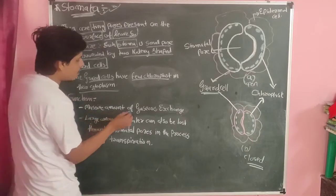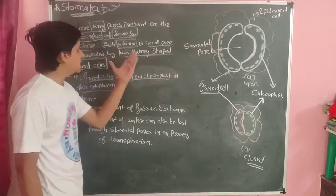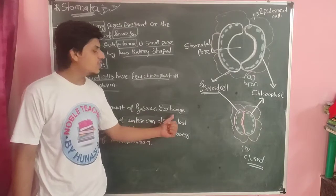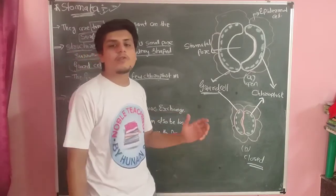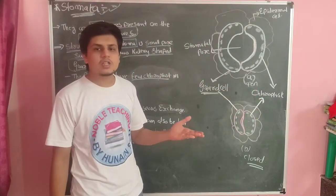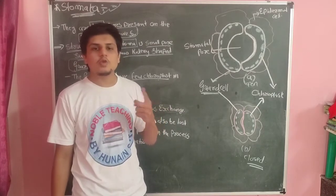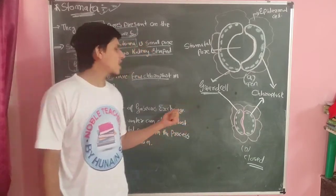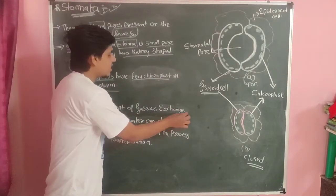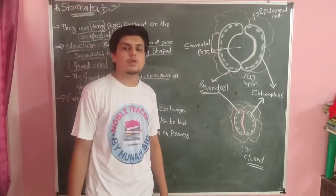A massive amount of gas exchange takes place through leaves. In the process of photosynthesis, stomata facilitate the exchange of CO2 and O2. So a massive amount of gas exchange takes place through stomata in the process of photosynthesis.